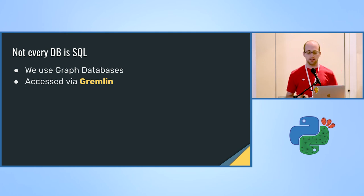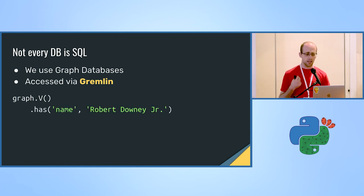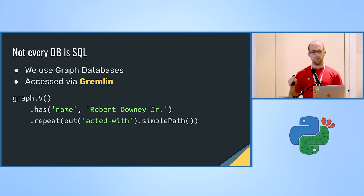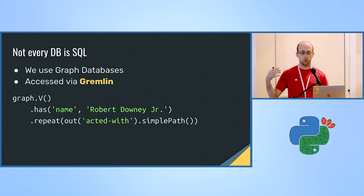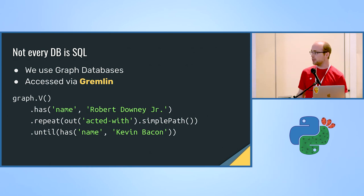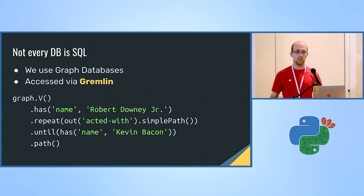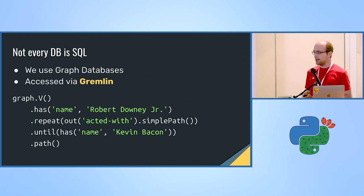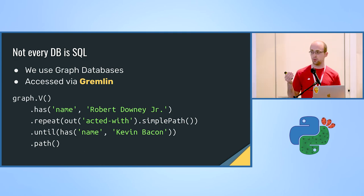A typical Gremlin query enables us to have more power. For example, I could start with a graph, go over all the vertices, filter to only those containing the property name of Robert Downey Jr., then repeatedly follow outgoing edges of the type 'acted with' while only maintaining a simple path — without any repetition — then stop when I reach a node with the name Kevin Bacon. By returning the path and computing the minimal length, I can obtain the Bacon number of Robert Downey Jr.